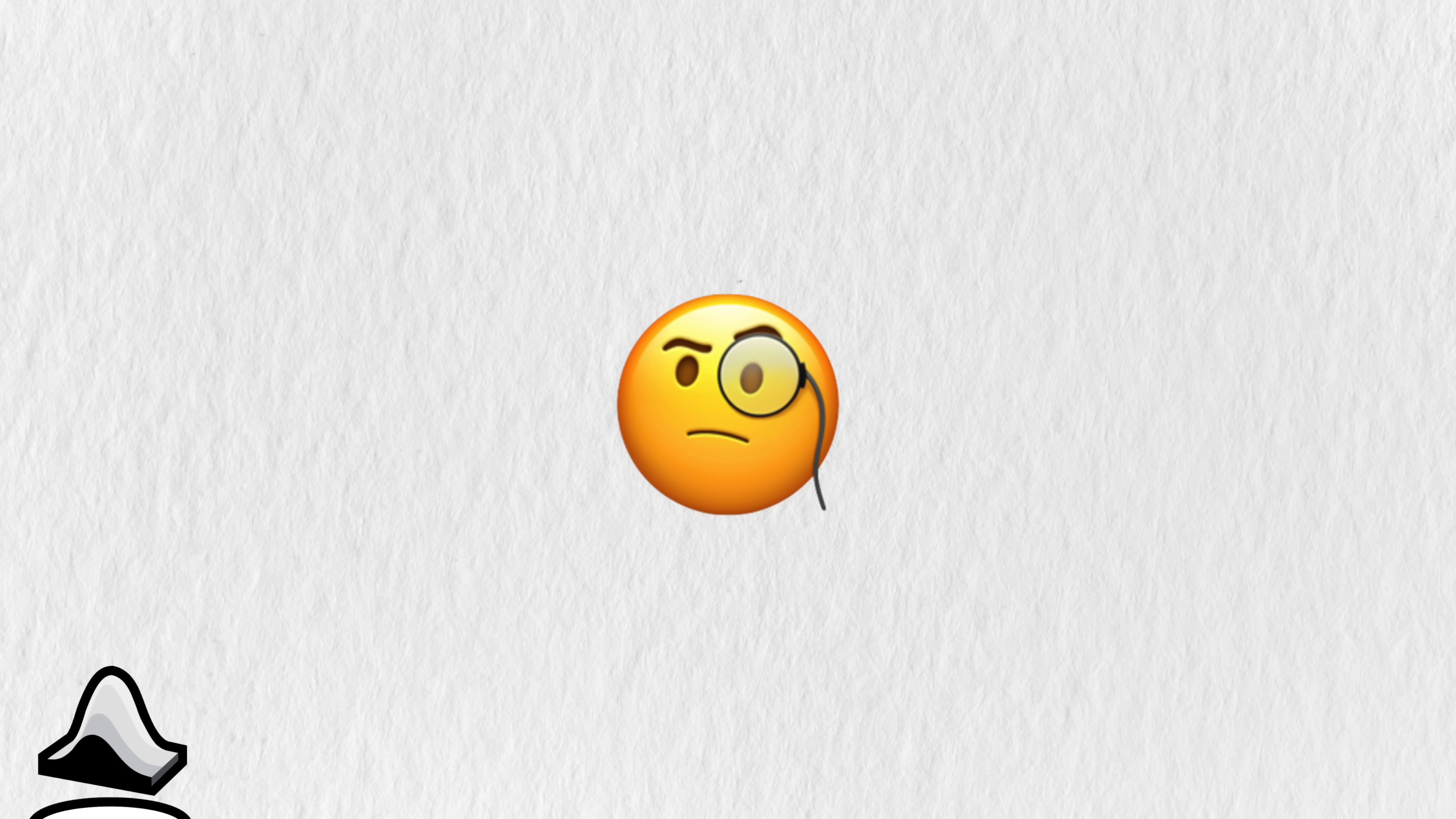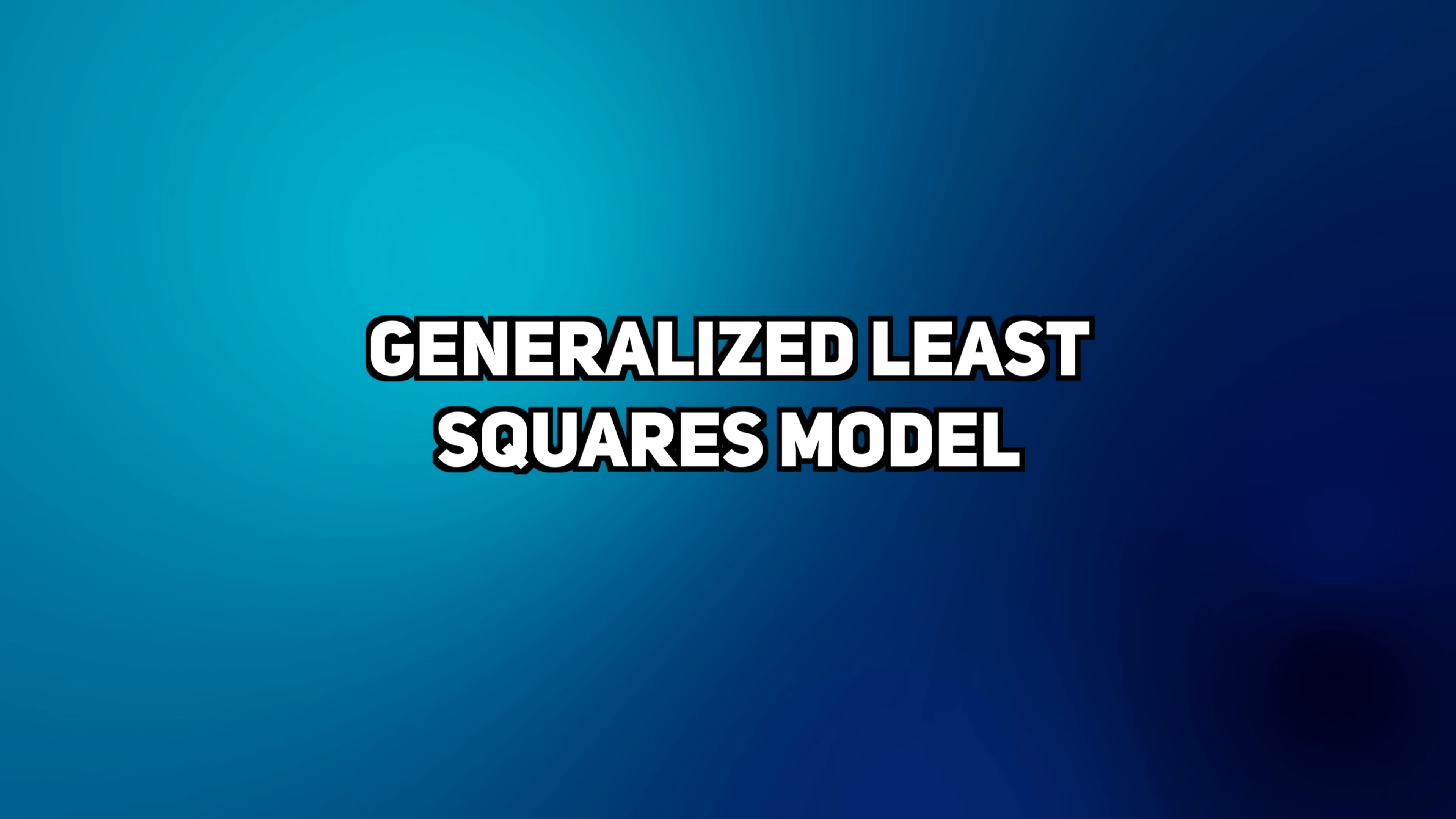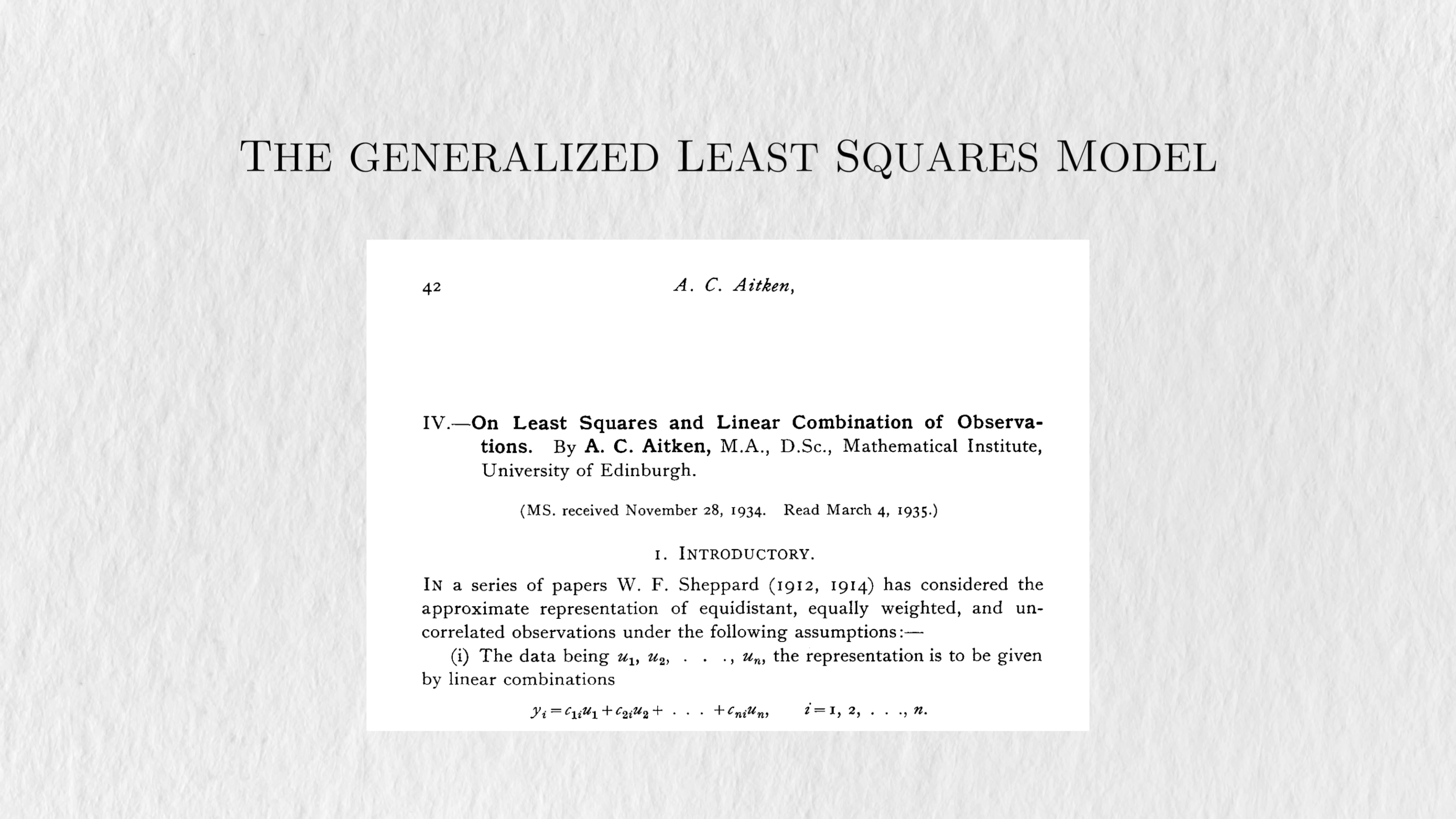Well, yeah, otherwise I wouldn't be making this video. Instead of using the ordinary least squares model, we could turn to its close cousin, the generalized least squares model, or GLS model. Like its name suggests, the generalized least squares model is a generalization of ordinary least squares, and it was developed by Alexander Aitken in 1935. It has many useful applications, and one of them is to model longitudinal data.